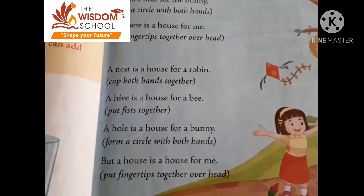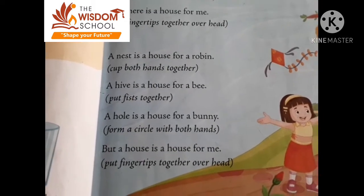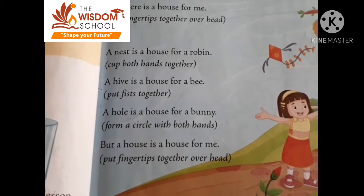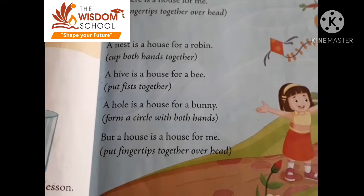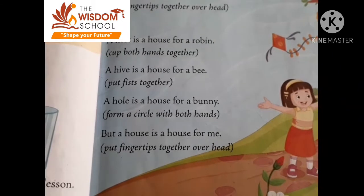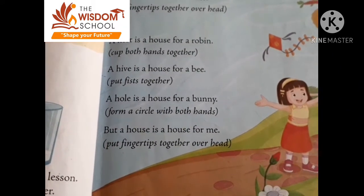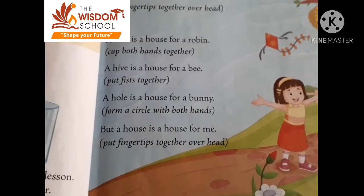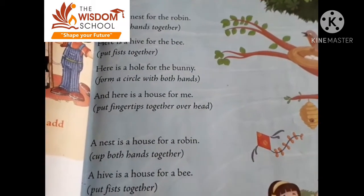A hive is a house for a bee. Form a circle with both hands — a hall is a house for a bunny. But a house is a house for me. Put fingertips together overhead. I hope students you have enjoyed your poem. Now come to the book work part.